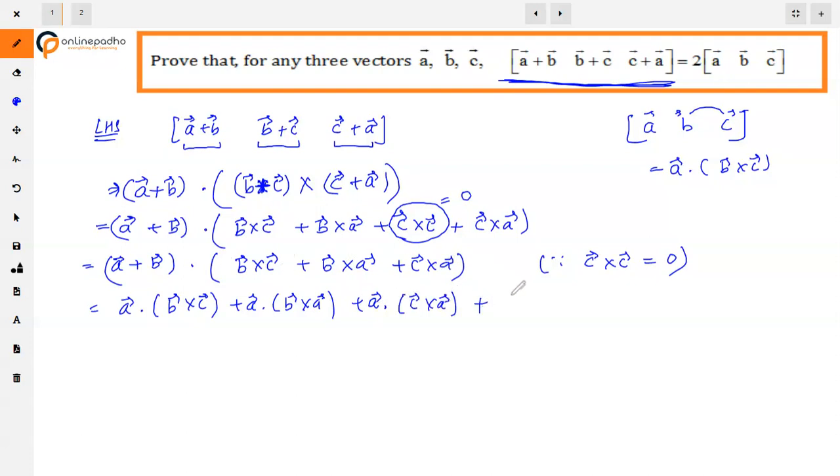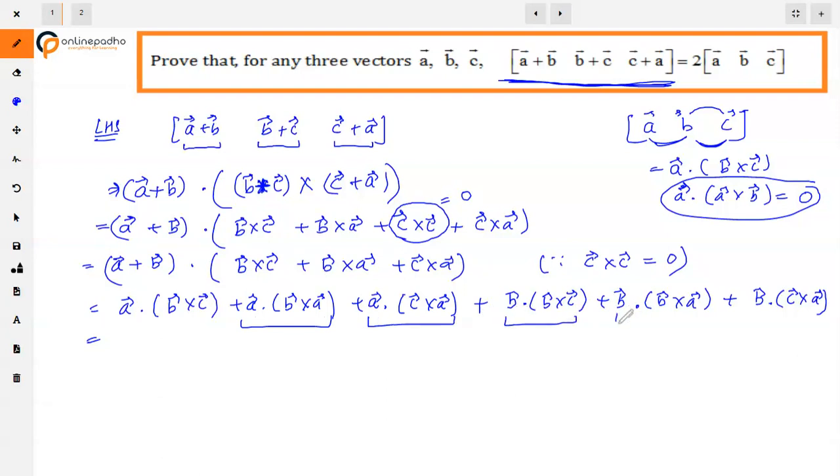So first we have A dot B cross C plus A dot B cross A plus A dot C cross A plus B dot B cross C plus B dot B cross A plus B dot C cross A.